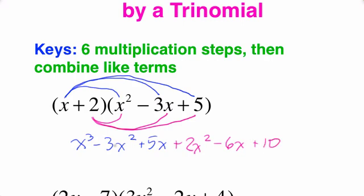Now we have to do our combined like terms. The first term and the last term usually won't have any like terms. So I'm just going to start with x cubed. Now I see several x squareds: negative 3x squared and plus 2x squared. That gives me minus x squared. I see 5x and minus 6x, so this gives me minus x. And then lastly, we have plus 10. Final answer: x cubed minus x squared minus x plus 10.